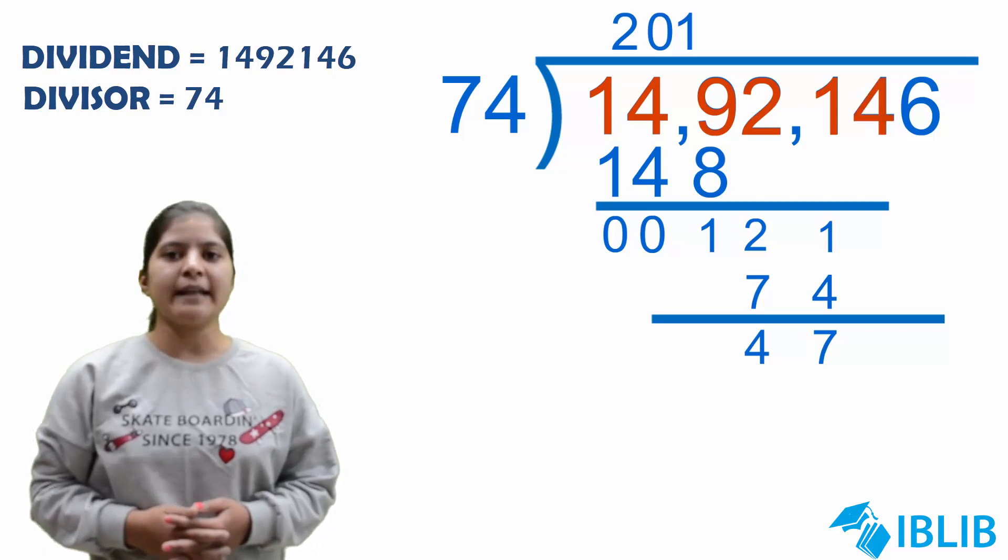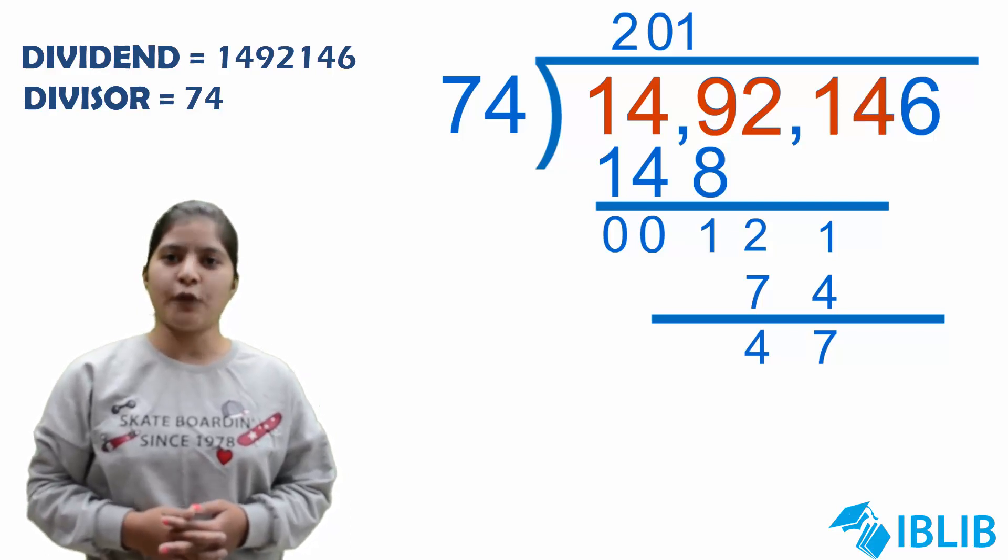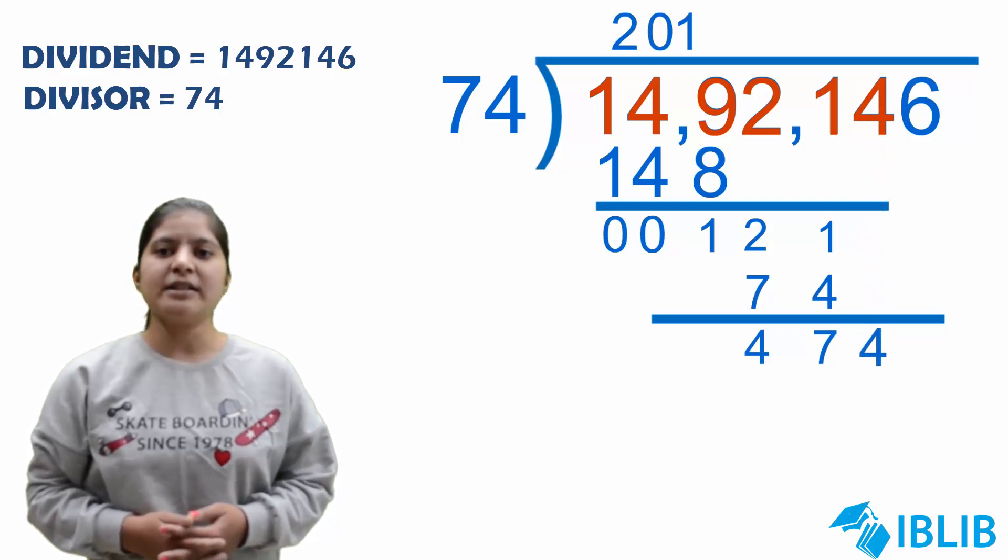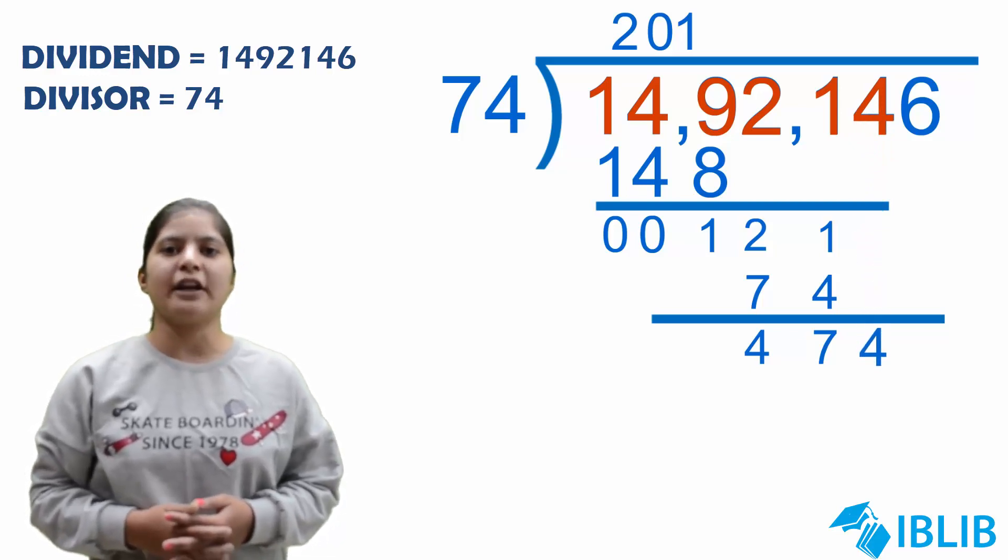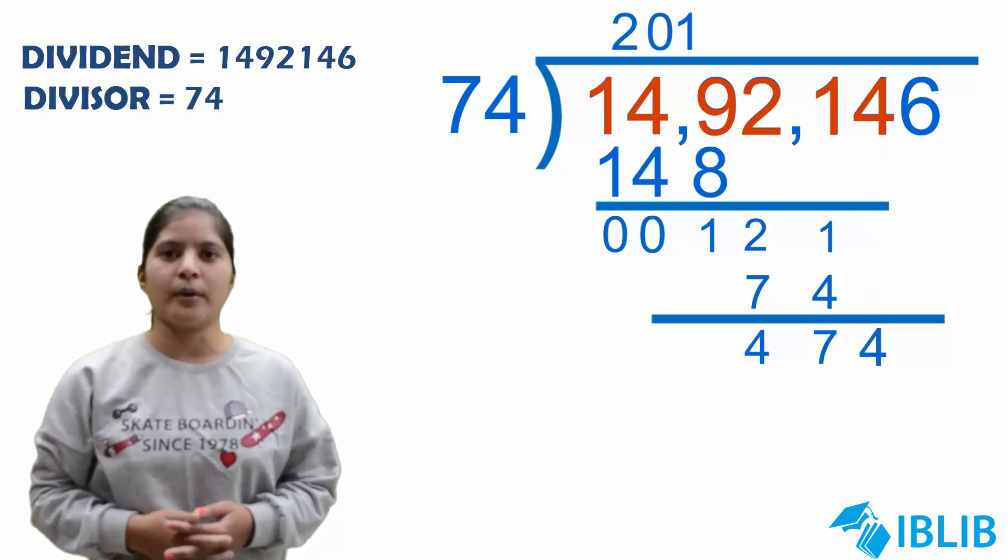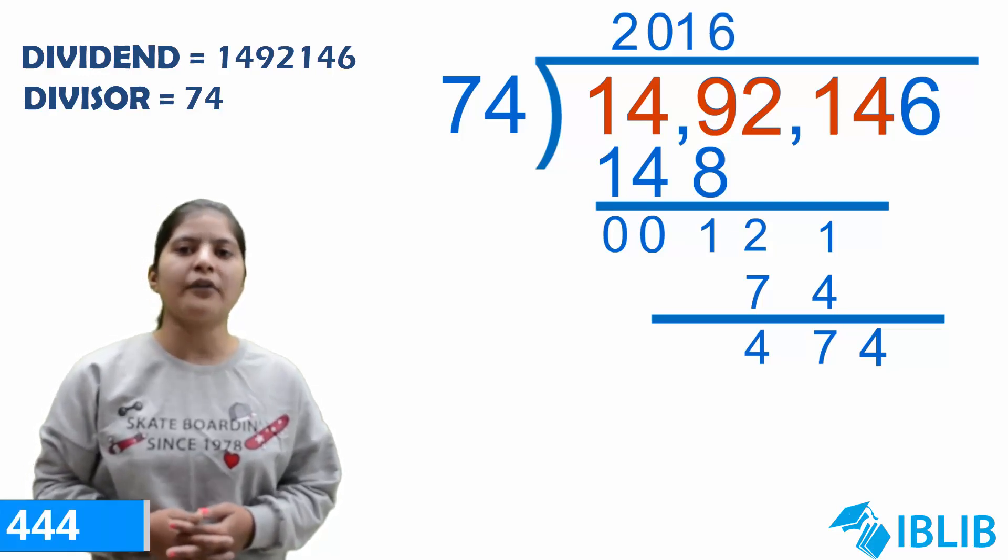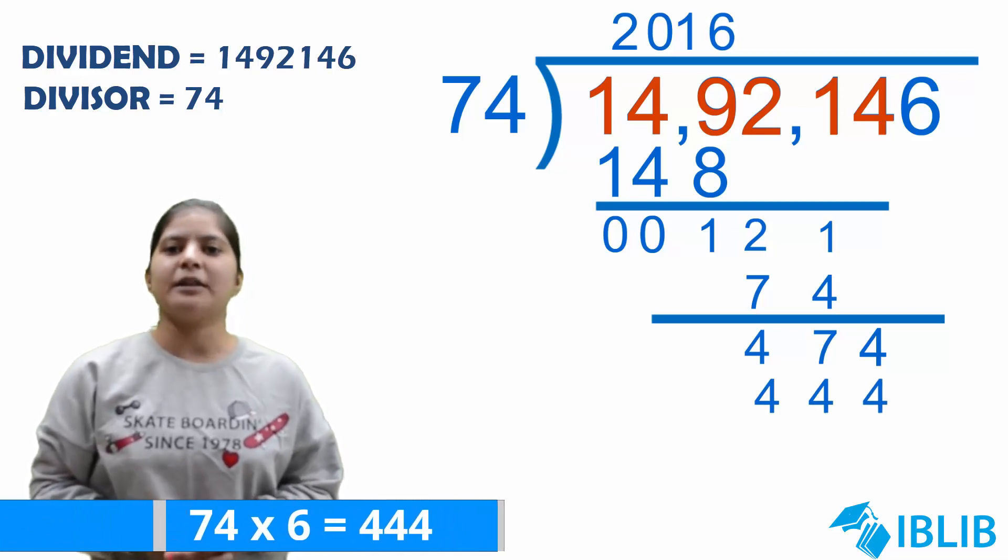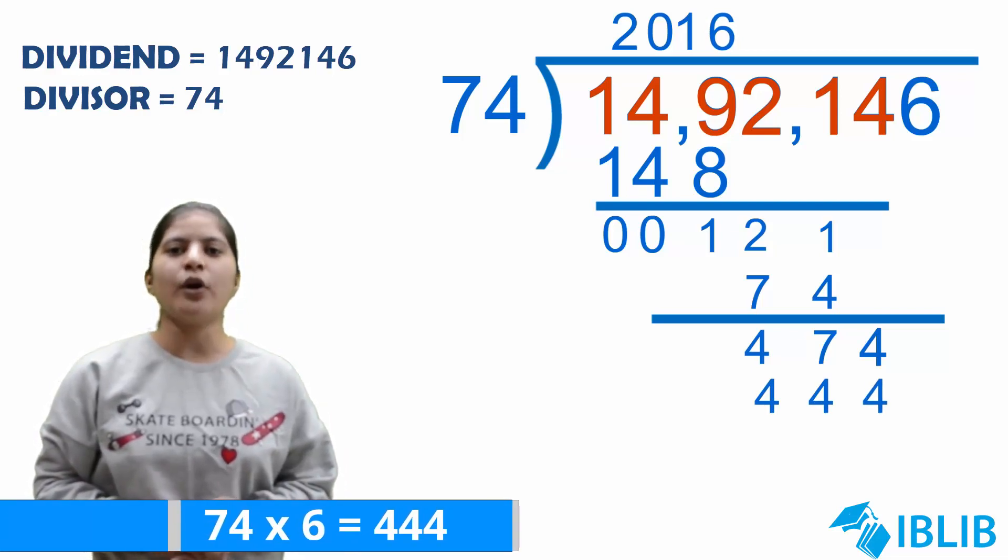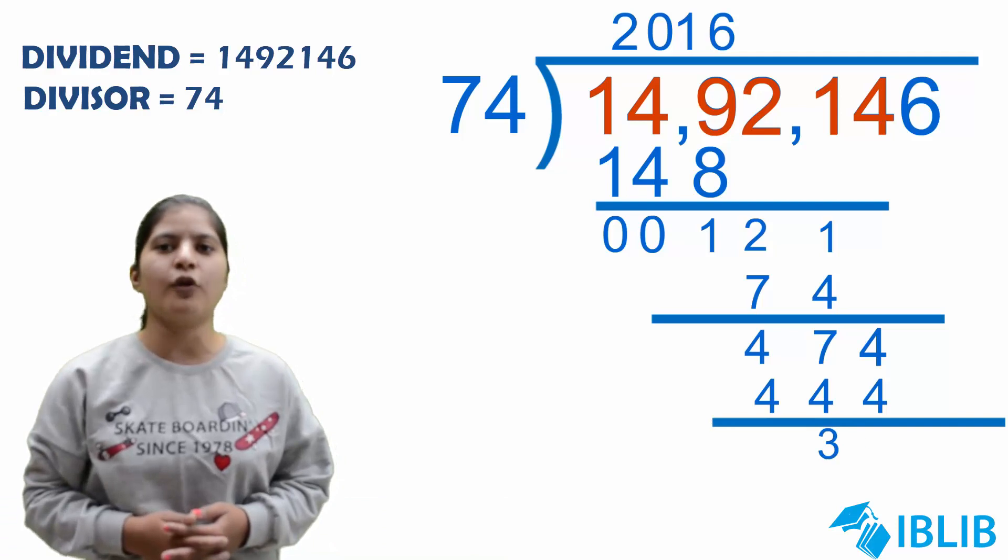Again, bring down the next digit of the dividend that is 4. We have 474. It means we have to divide 474 by 74. Now, 74 times 6 will give us 444. We will write 6 at the place of quotient and 444 below 474.